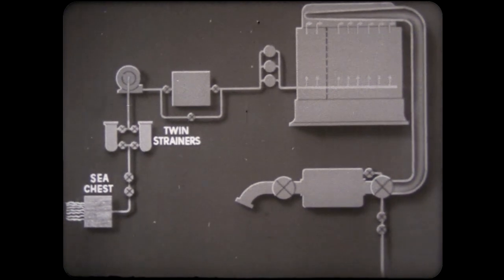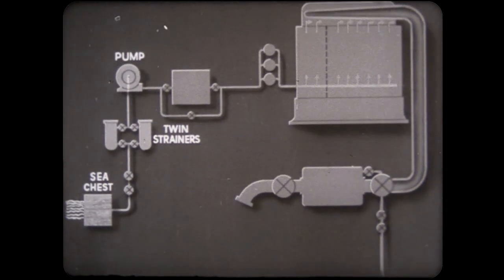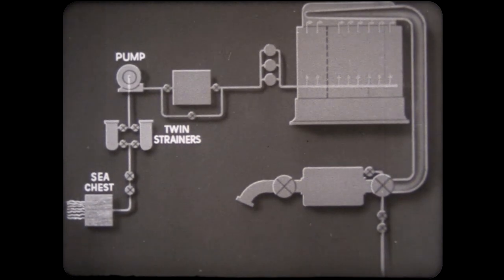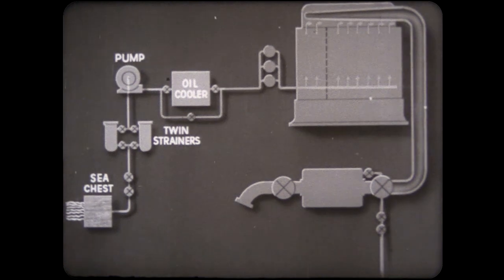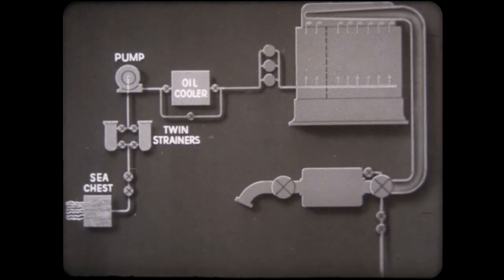Usually, the water is pumped through the system by a centrifugal pump. From the pump, the water is carried to the oil cooling heat exchanger. If the oil does not require cooling, as in starting or in cold weather, the water may be bypassed around this unit.